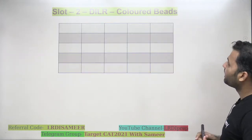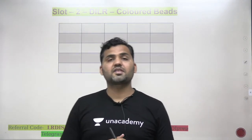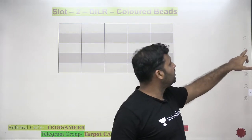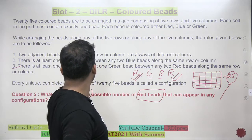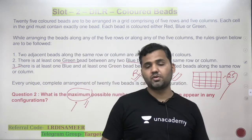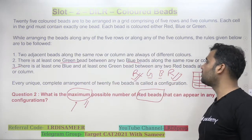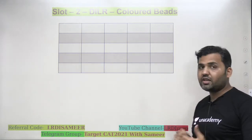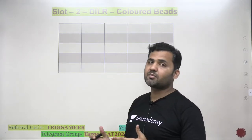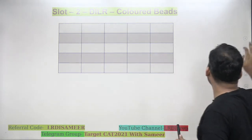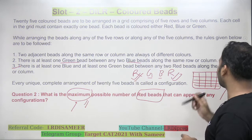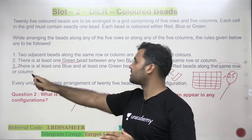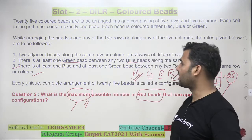How will we do that? The conditions state: two adjacent cells cannot have the same color; between any two blue beads, at least one green is required; and between any two red beads, one green and one blue are required. Importantly, these conditions are applicable only row-wise or column-wise — not diagonal-wise.